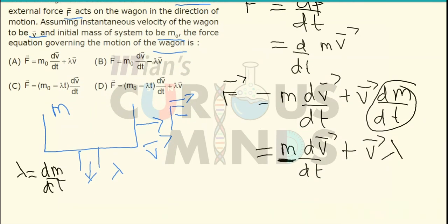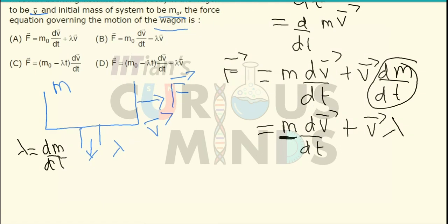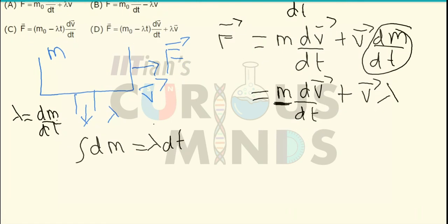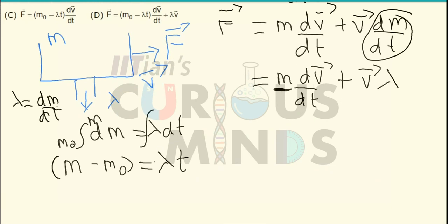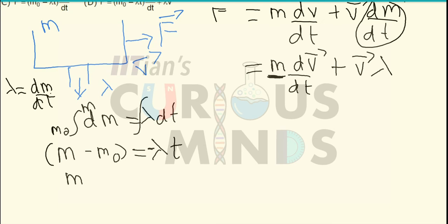Since the mass is falling constantly, lambda equals dm by dt, so dm equals lambda dt. Integrating both sides, with initial mass m₀ and final mass m, we get m minus m₀ equals lambda times t. Since the mass is declining, m equals m₀ minus lambda t.